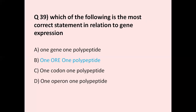Question number 39: Which of the following is the most correct statement in relation to gene expression? Option A one gene one polypeptide, option B one ORF one polypeptide, option C one codon one polypeptide, option D one operon one polypeptide. The correct answer is B, one ORF one polypeptide.